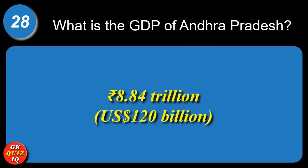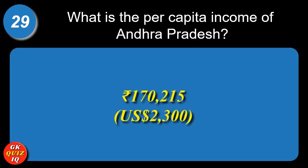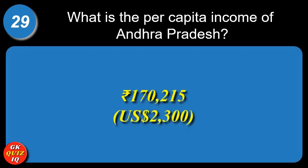What is the GDP of Andhra Pradesh? 8.84 trillion rupees. What is the per capita income of Andhra Pradesh? 1,70,215 rupees.